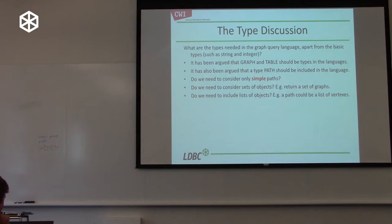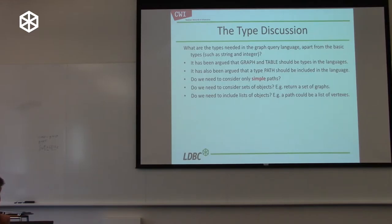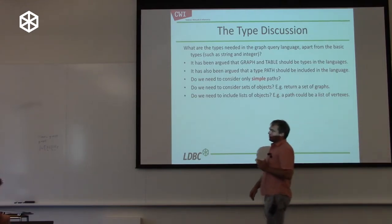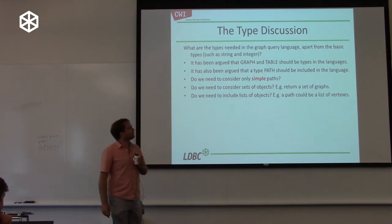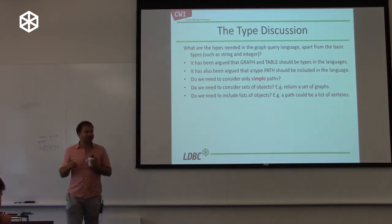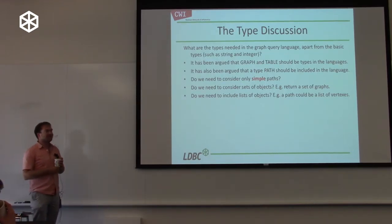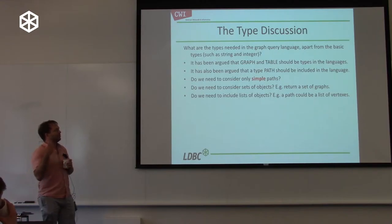We also have paths in graph query languages. A path is not really the same as a graph, because you could have paths that visit the same vertex multiple times, and there is an order in these paths. Sometimes we want to return paths, so we would have to return three different sorts of data: paths, graphs, and tables. Is this desirable? That is a big discussion. There has been a proposal to restrict ourselves only to tables, but this is not seen as the only solution in the task force.